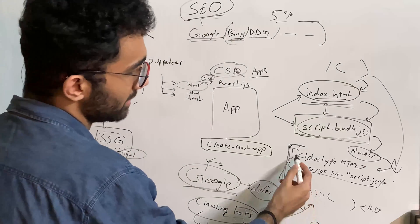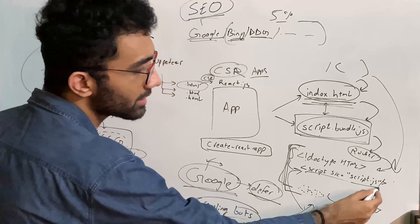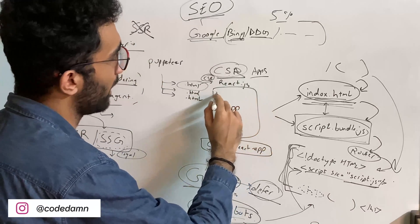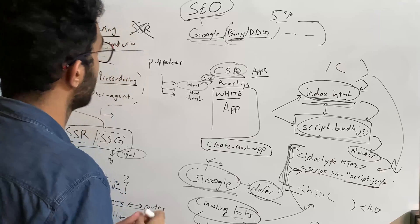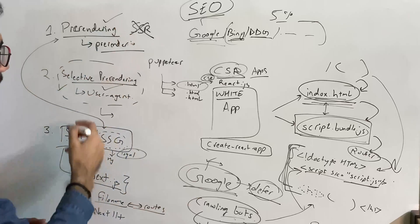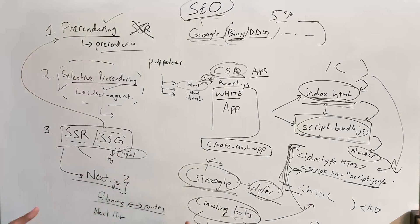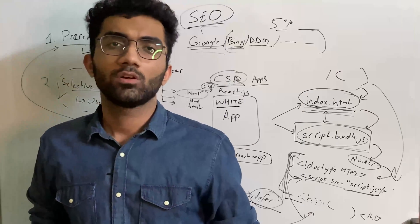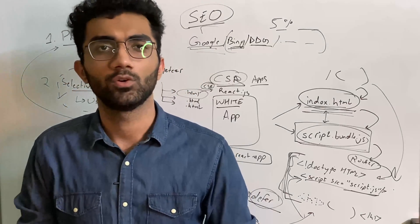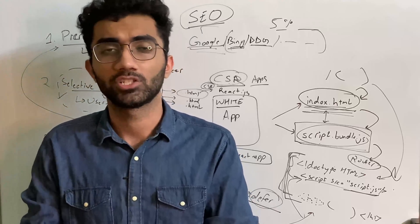The gist of the video is that search engines need a lot of content in the index.html because they are lazy — they'll either defer or not execute your script at all, leaving your client-side application as a white page for SEO bots, which means no ranking. To fix that, you have pre-rendering, selective pre-rendering (better but slightly risky since you're sending different content), and the best solution available: Next.js with server-side rendering and server-side generation. We personally use Next.js for codedamn.com. Hopefully you were able to understand the basics of SEO, why React and client-side applications don't work well with SEO, and how to make your React app SEO-friendly with these three techniques.